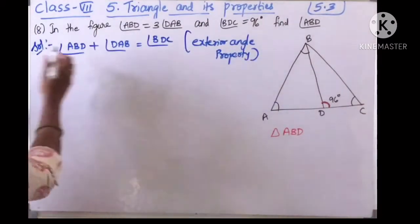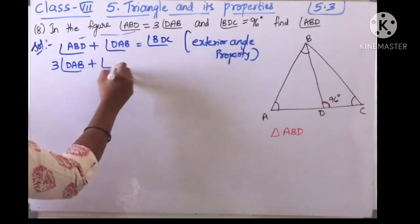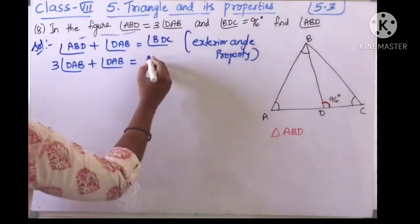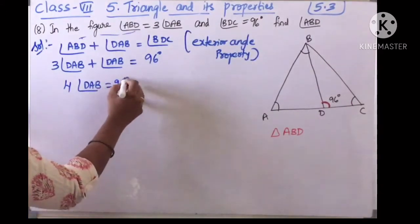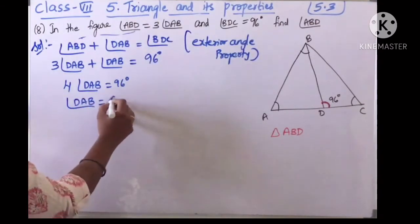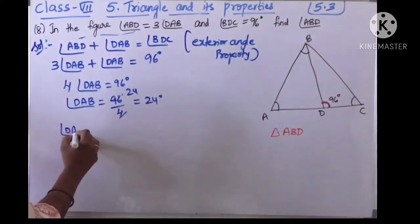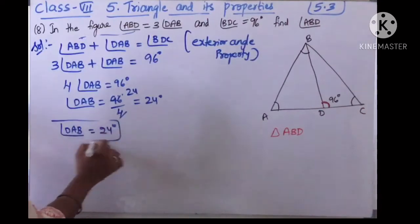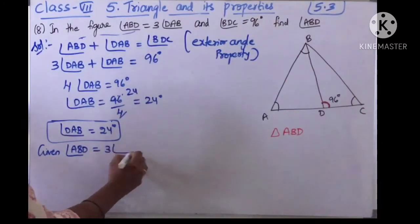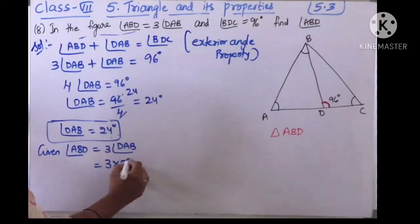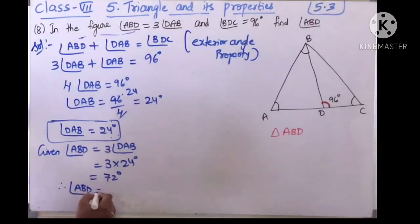Since ABD equals 3 times DAB, substitute: 3 times DAB plus DAB equals 96 degrees, giving 4 times angle DAB equals 96, so angle DAB equals 24 degrees. Therefore angle ABD equals 3 times 24 equals 72 degrees.